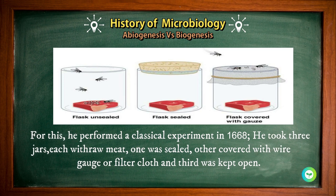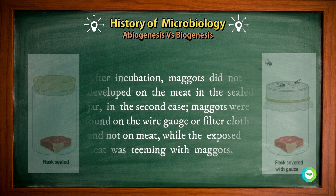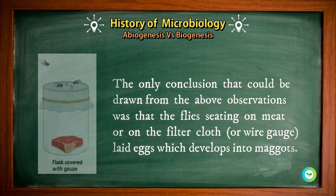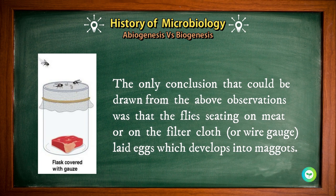For this, he performed a classical experiment in 1668. He took three jars, each with raw meat. One was sealed, another covered with a wire gauge or filter cloth, and the third was kept open. After incubation, maggots did not develop on the meat in the sealed jar. In the second case, maggots were found on the wire gauge or filter cloth and not on the meat, while the exposed meat was teeming with maggots. The only conclusion was that flies sitting on the meat or on the filter cloth laid eggs which developed into maggots.